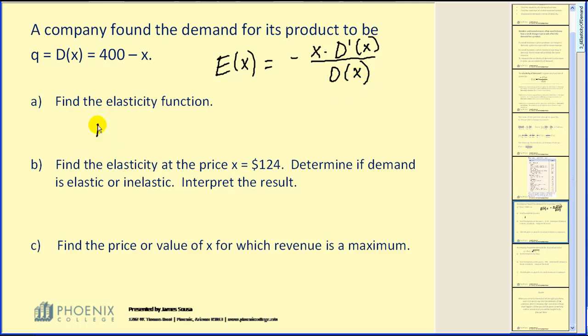For this problem, it's pretty straightforward. When we have negative x times the derivative of the demand function, which we can see here would be negative one, divided by the demand function, 400 - x. Simplifying, notice we have x in the numerator and 400 - x in the denominator, so E(x) = x / (400 - x).